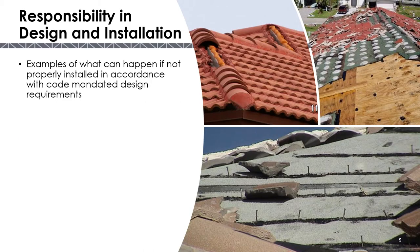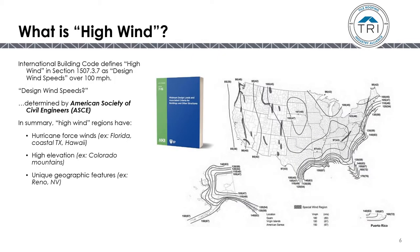As roofing professionals, we have a responsibility to make sure that a roof is designed and installed to meet code requirements. The International Building Code defines high wind as design wind speeds over 100 miles per hour. High wind regions are areas with hurricane-force winds such as Florida, coastal Texas, and Hawaii, or high elevations like the Rocky Mountains of Colorado, or areas with unique geographic features such as Reno, Nevada.